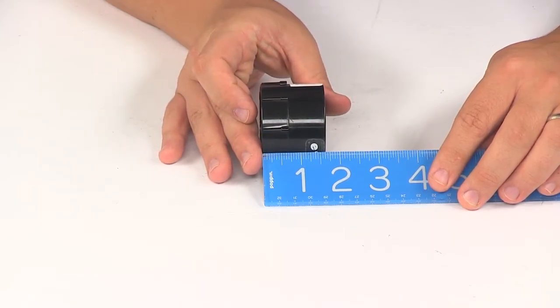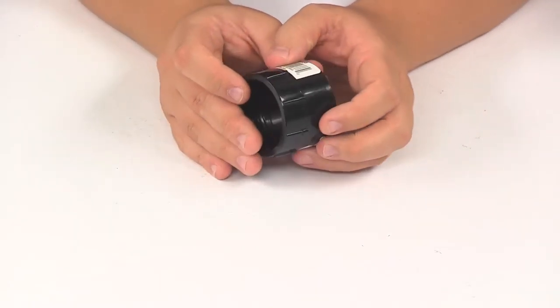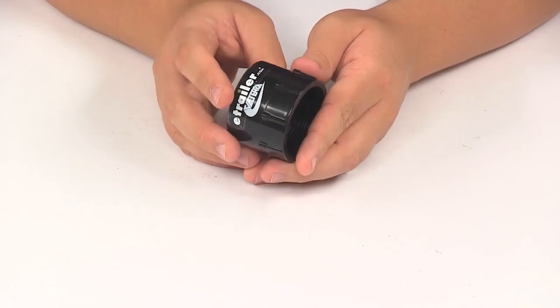Overall length of the unit is going to measure about one and five-eighths of an inch long, and this is IAPMO listed. That stands for International Association of Plumbing and Mechanical Officials.